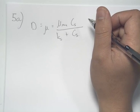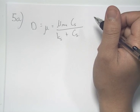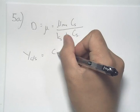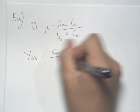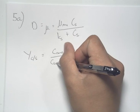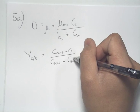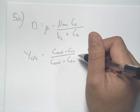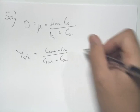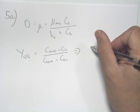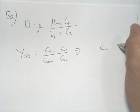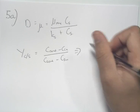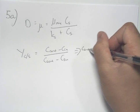We can find the concentration of the substrate by using the yield coefficient: Y cells over substrate, which is the cells out minus cells in concentration over the substrate out minus substrate in concentration. Rearranging in terms of C substrate out, we get: C out minus C in for Y_C/S equals C_S out minus C_S in.